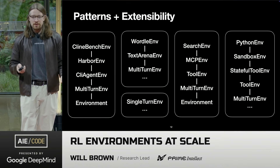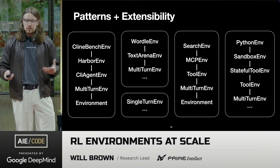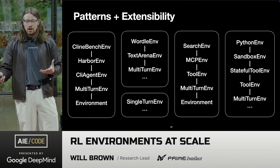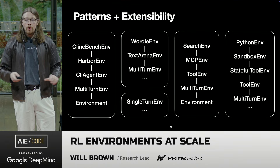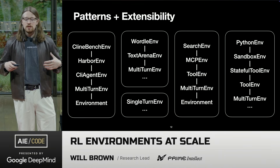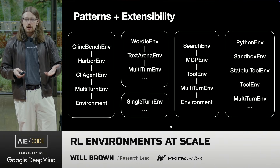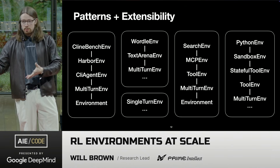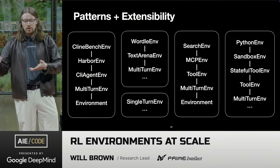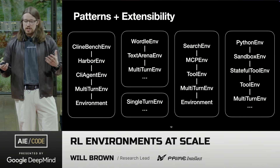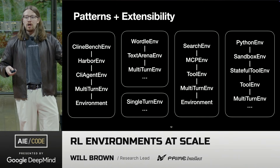The design challenge was: how do you make a toolkit that actually covers all the bases? We took a very general approach, saying we are not going to know all the answers right away — there will be lots of patterns, special cases, and hierarchies of complexity. We really wanted to prioritize extensibility. We think about these things hierarchically: for example, a coding agent environment for Kleinbench is an instance of the Harbor framework, which is an example of a CLI agent, which is a multi-turn environment. Similar hierarchies apply for WikiSearch with MCP, or giving a model a Python REPL in a sandbox.